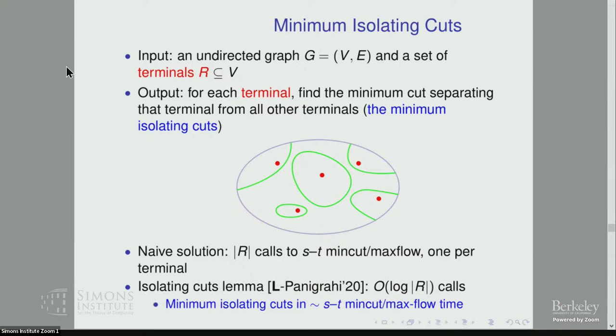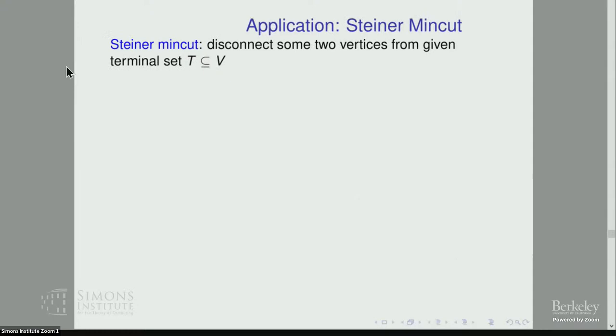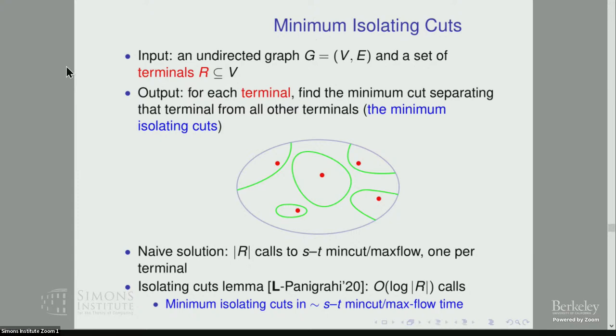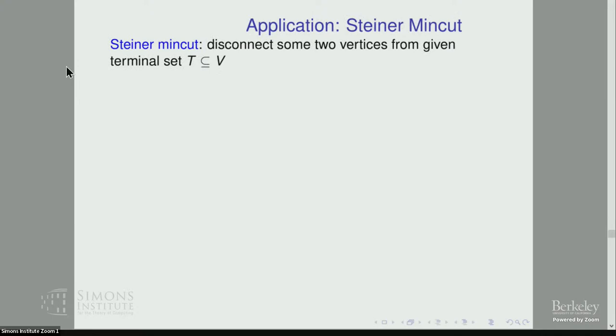But the main result in this direction, which we call the isolating cuts lemma, shows we can do much better. We can solve this problem in just a logarithmic number of calls — in other words, computing all isolating cuts has roughly the same complexity as just one ST min cut call. This algorithm itself is quite simple, fitting in about two pages of proof, but I won't have time to go over it. Instead, I'll show how this min isolating cuts primitive can be used to solve Steiner min cut in a very simple way.